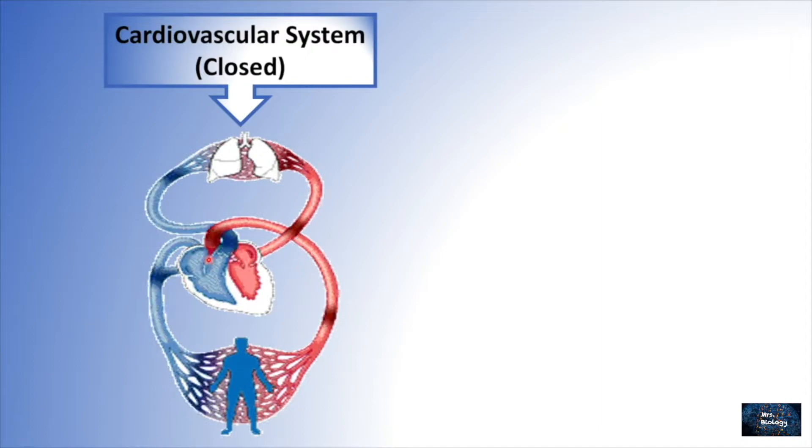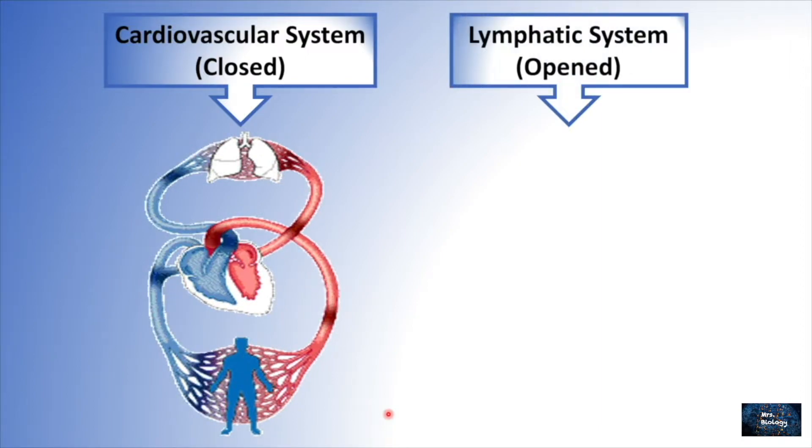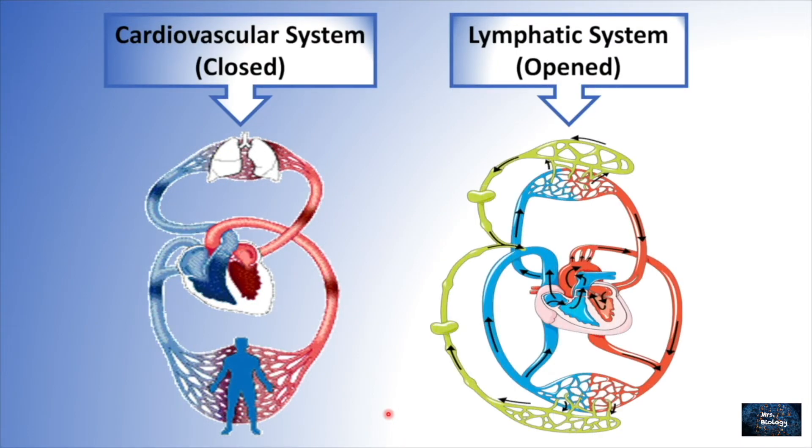Unlike the cardiovascular system, the lymphatic system is not closed. It's an open system. The lymph is moved through the body in its own vessels, making a one-way journey from the interstitial spaces to the subclavian veins.